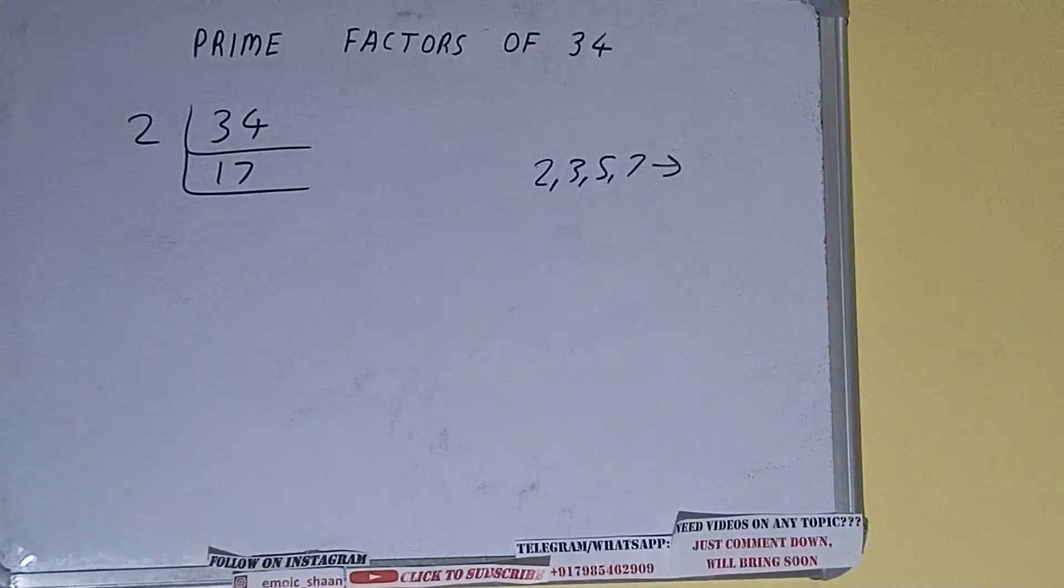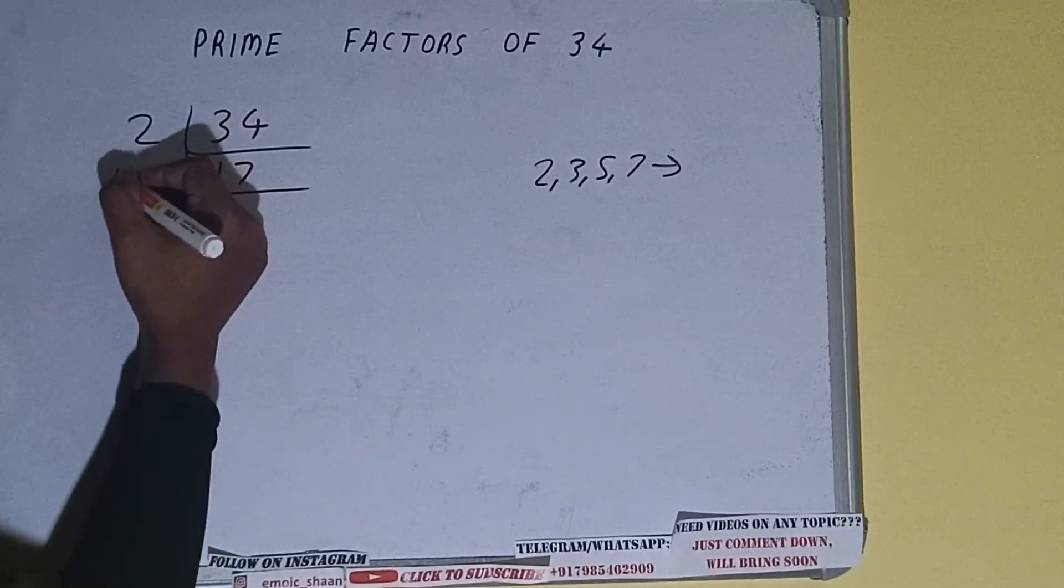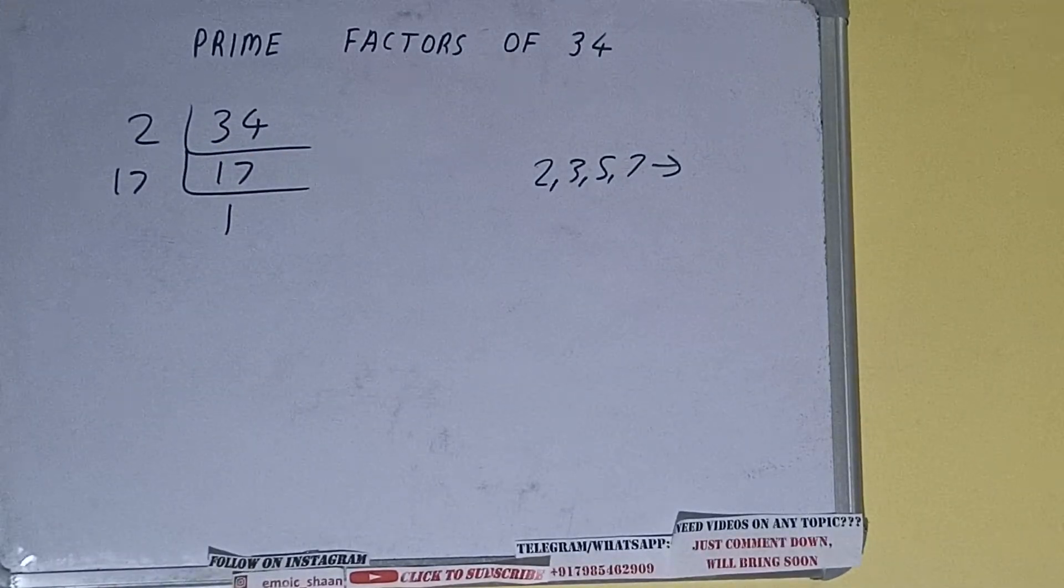Now 17 is further not divisible by 2 because it is an odd number and on that it is also a prime number. So it is only divisible by itself that is 17 and once we do so we'll be getting 1.